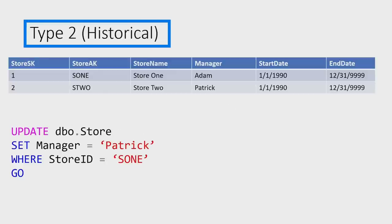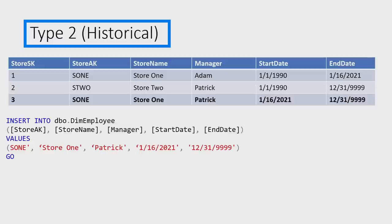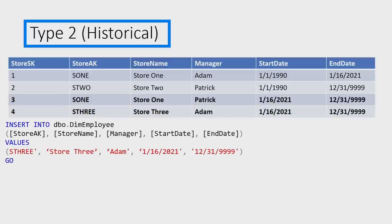The big question: type two. Type two is historical. Right now I have two rows — surrogate key one for store one and surrogate key two for store two — and Adam is the manager of store one. But when I run the update in the source changing the manager to Patrick, the first operation is going to expire Adam's row, setting a date range showing when Adam was the manager. Then a new row is inserted for the same store with a different surrogate key, and now Patrick is the manager. We can track who was the manager historically. These two columns — a start and end date — tell you the range. Sometimes an additional Boolean column is added to indicate the current role. Then Adam might become the manager of another store, so we'd add Adam as the manager of store three. That's the basic description of how a slowly changing dimension works.